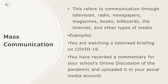The third type of interpersonal communication is mass communication. This refers to communication through television, radio, newspapers, magazines, books, billboards, the internet, and other types of media. Examples include watching a televised briefing on COVID-19, or recording a commentary for your school's online discussion of the pandemic and uploading it to your social media account. These are under mass communication because the media is involved, and the number of people who can listen, watch, or be affected by the message is very wide.